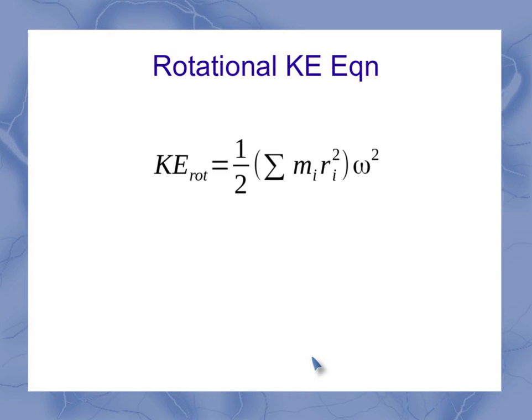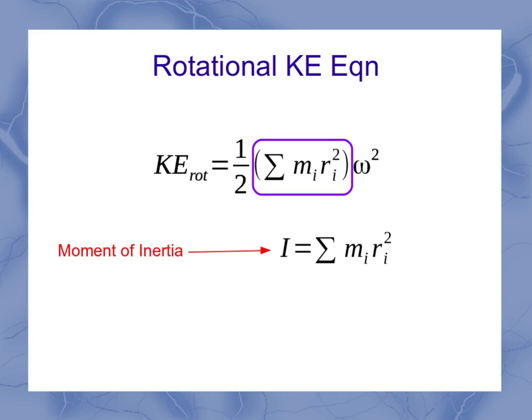Now if I take that equation, what I recognize is that this chunk of it, I've seen that before. That's actually my moment of inertia. And some people actually use this rotational kinetic energy equation as the justification for defining the moment of inertia this way. And so that means the more common form of writing the rotational kinetic energy is one-half I omega squared, the moment of inertia times the angular velocity squared.